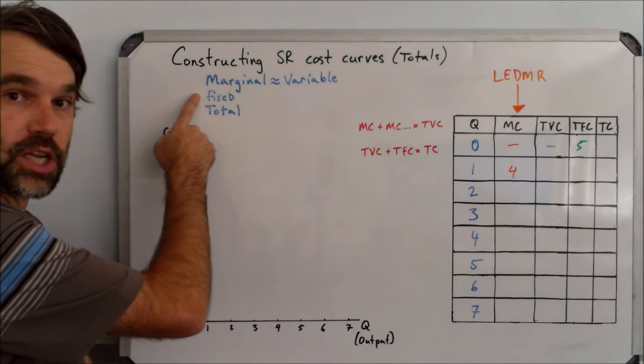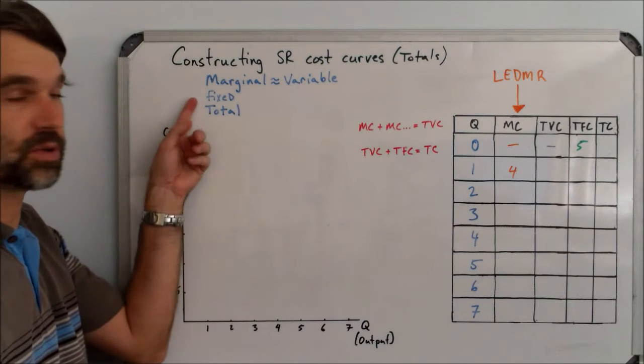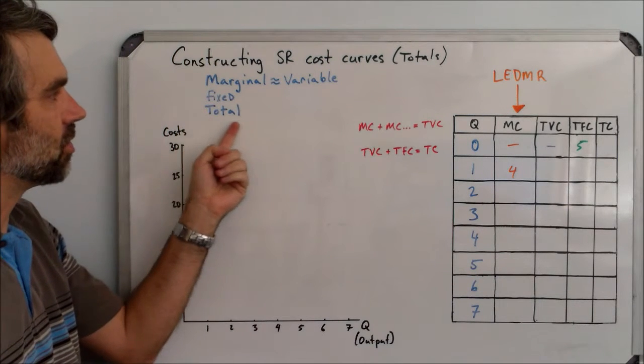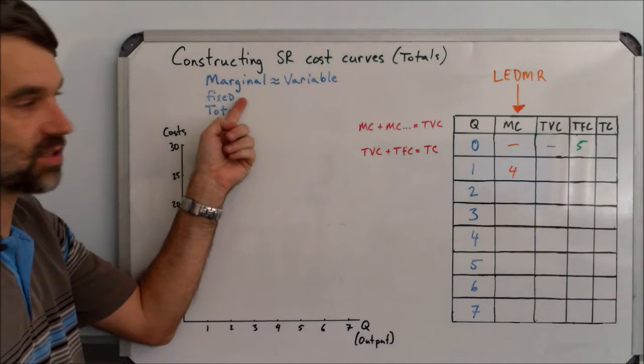Remember fixed costs are costs that don't change over time, or they don't change as you produce more and more. And then total costs are going to be the variable cost added to the fixed cost.